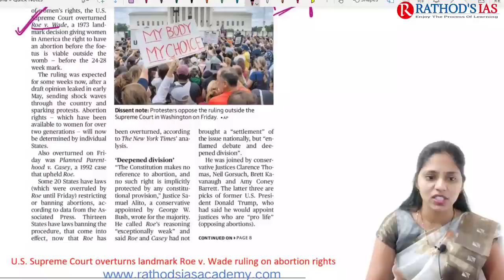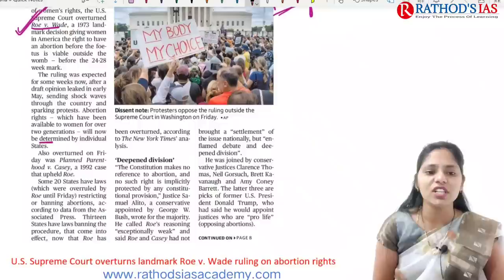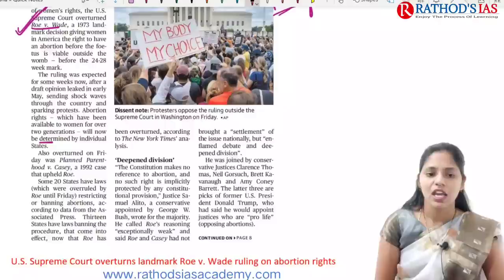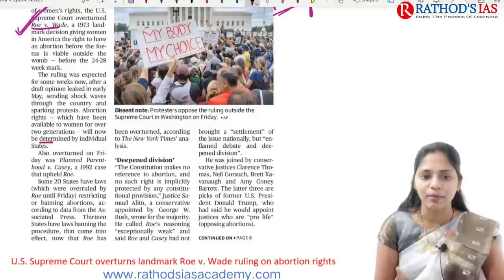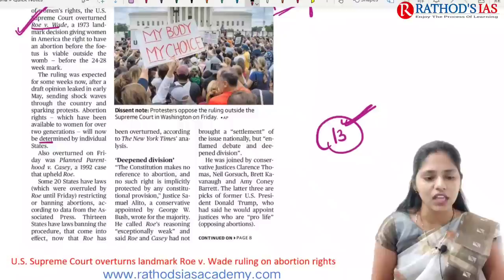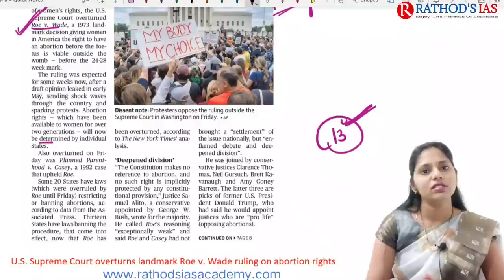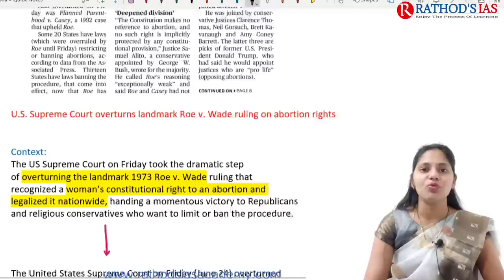The US Supreme Court overturned this judgment, so abortion rights are now left to individual states. A cause of concern here is that more than 20 states have been restricting or banning abortion. According to data, 13 states have laws banning the abortion procedure. Because of this overturning, there is a wide range of protests happening.